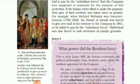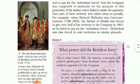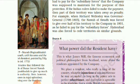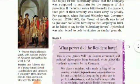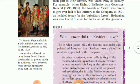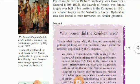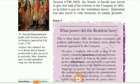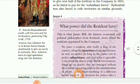They imposed a condition over the Indian rulers: protection by armed forces would be under the local rulers, but without the order of the British authority, they would not be allowed to take any action. If the ruler failed to pay the salary to maintain the military, their territory would be annexed and taken away by the British as penalty. For example, when Richard Wellesley was Governor-General, the Nawab of Awadh was forced to give over half of his territory to the company in 1801, as he failed to pay for the subsidiary forces. Hyderabad was also forced to cede territories on similar grounds.